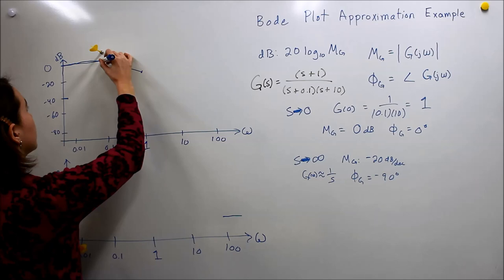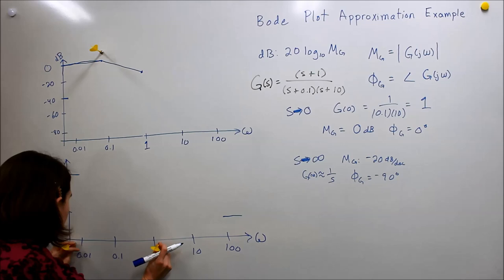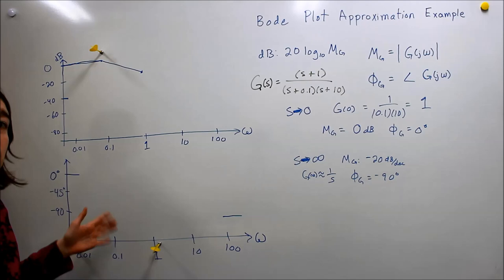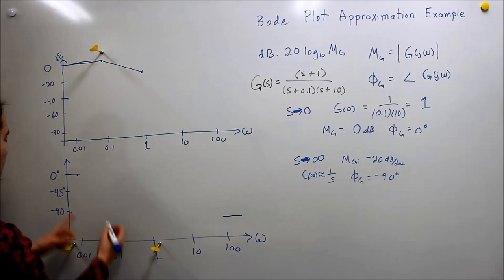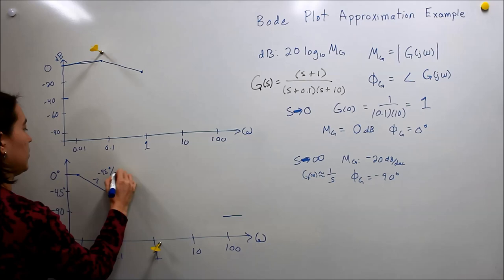The effect on the phase spans plus or minus one decade around the pole. So this one pole will affect the phase from 0.01 to 1, making it decrease by negative 45 degrees per decade. So we can start drawing that: we'll see it decrease by negative 45 degrees per decade, getting approximately to negative 45 degrees at frequency 1.